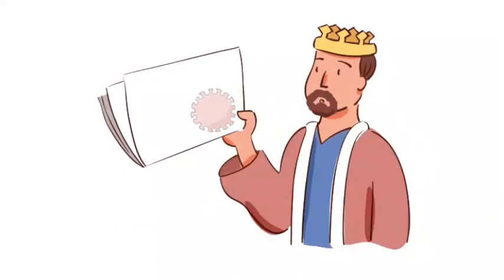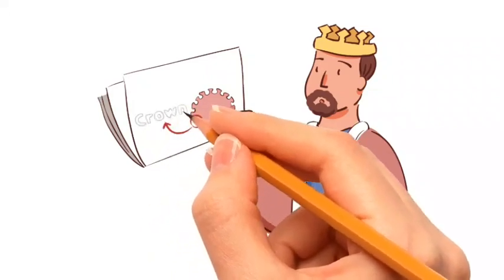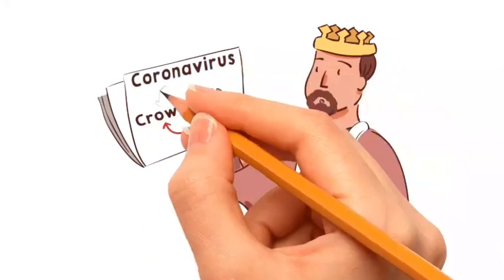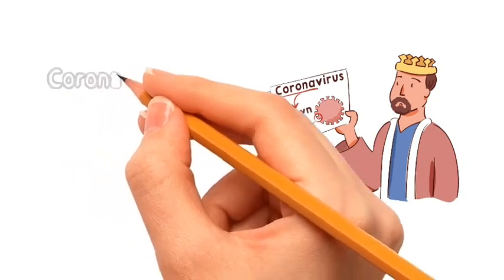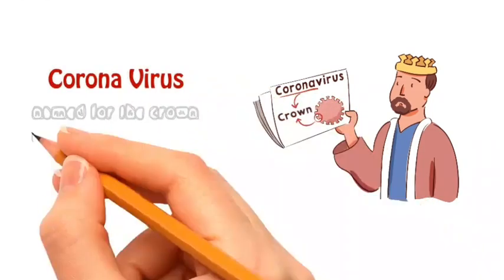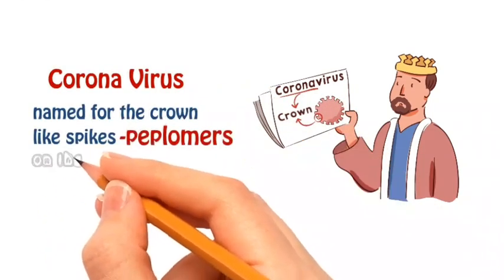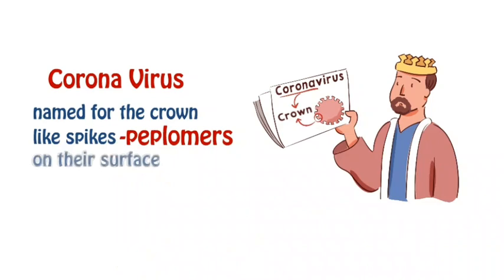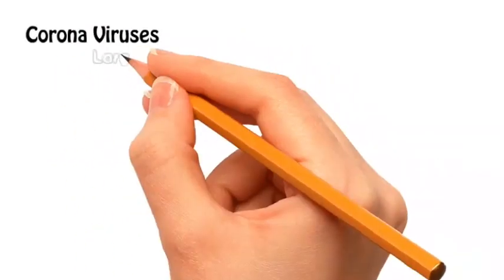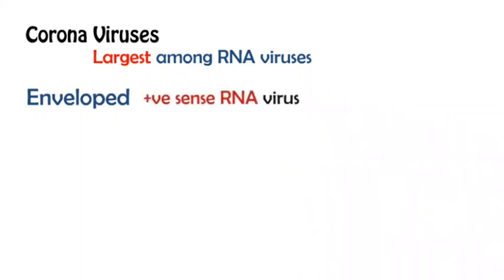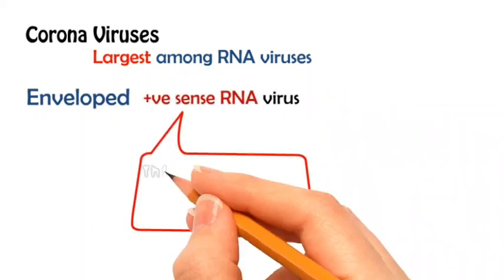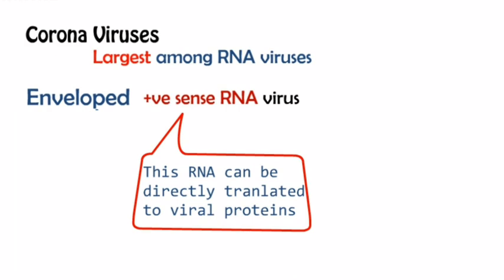The virus is found to be shaped like a crown, and hence it was named the coronavirus. The crown-like appearance is produced by the spike-like peplomas present on their surface. Coronaviruses are the largest among the RNA viruses. They are enveloped, positive-sense RNA viruses.